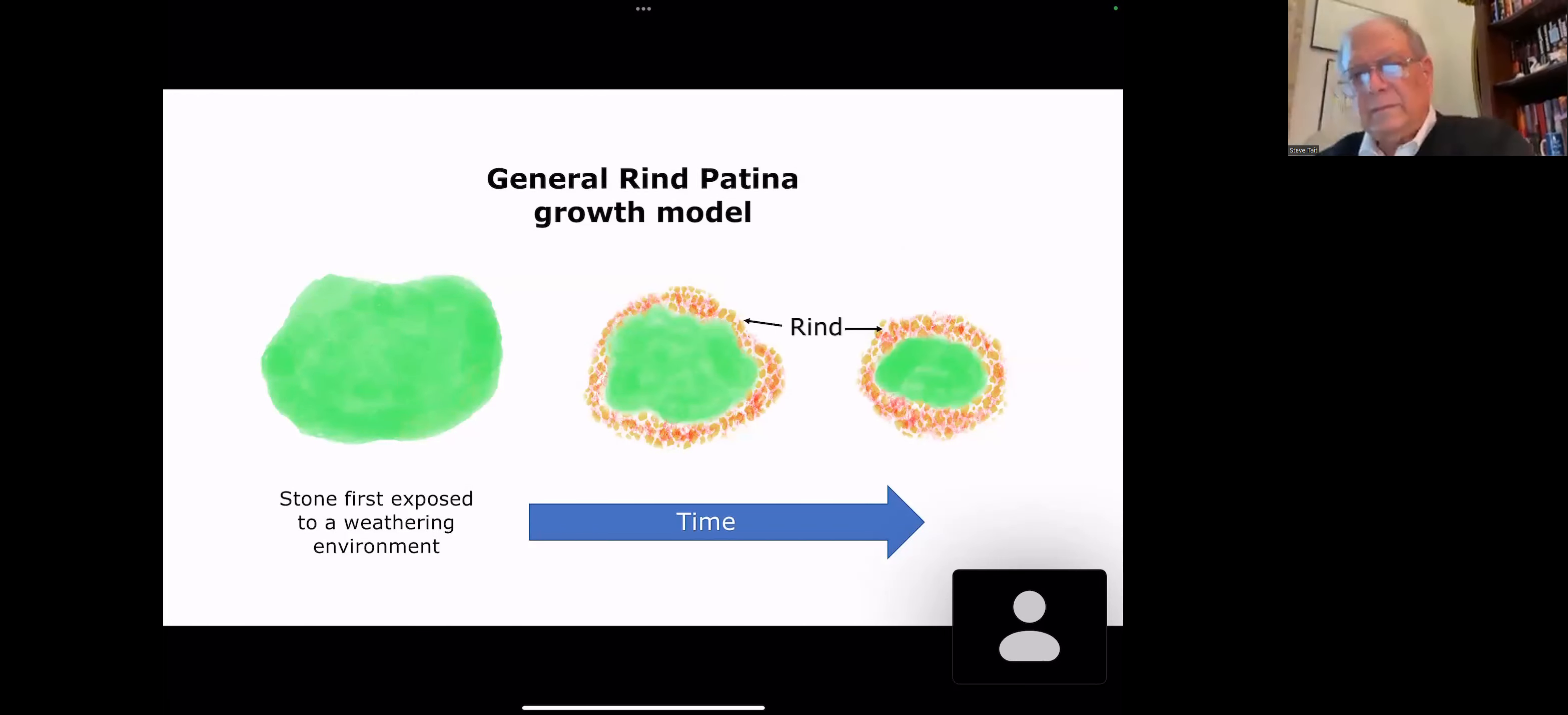General growth model, this I put together based on the most current belief as to how rind patinas grow. Start with when the stone is first exposed to the weathering environment, time increasing on the right side here. Here's the unweathered stone, as time goes on it forms a rind, and the stone gets smaller. Now, the rind also erodes, so you won't find your stone with the rind being the same size as the original stone. And as time goes on, it gets smaller and smaller until now it's soil.